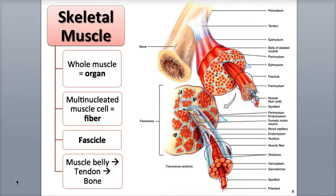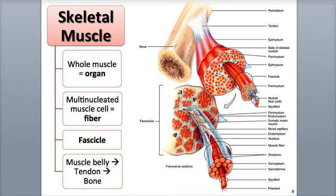Let's look further at the relationship between muscular tissue and its connective tissues. There are three specific layers of connective tissue that originate from the fascia and act to strengthen and protect muscle. These layers are, from outer to inner: the epimysium, the perimysium, and the endomysium.